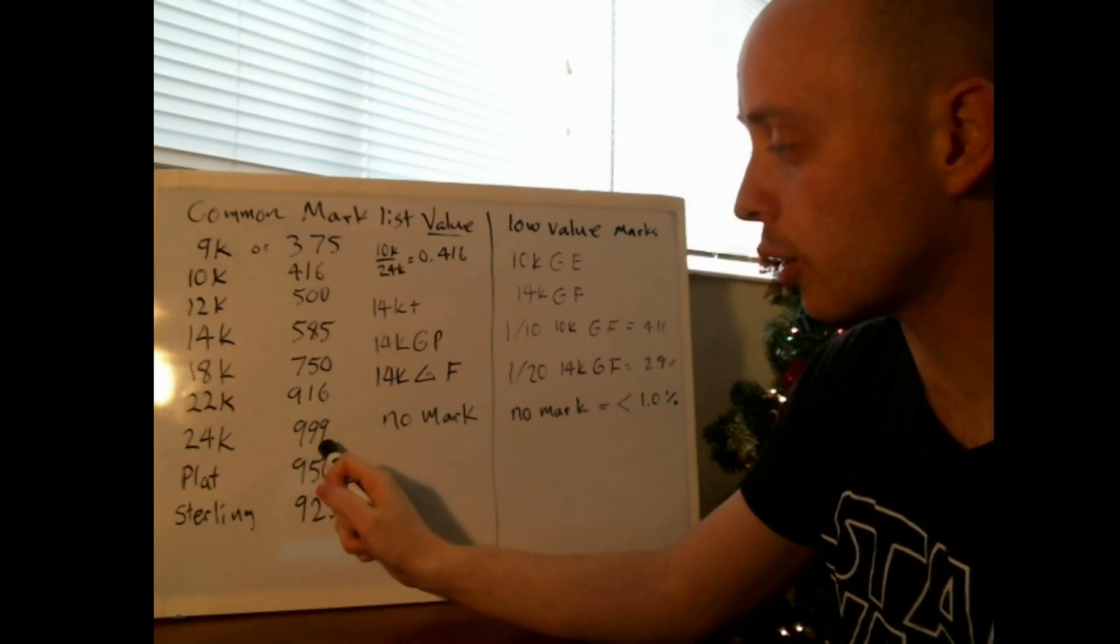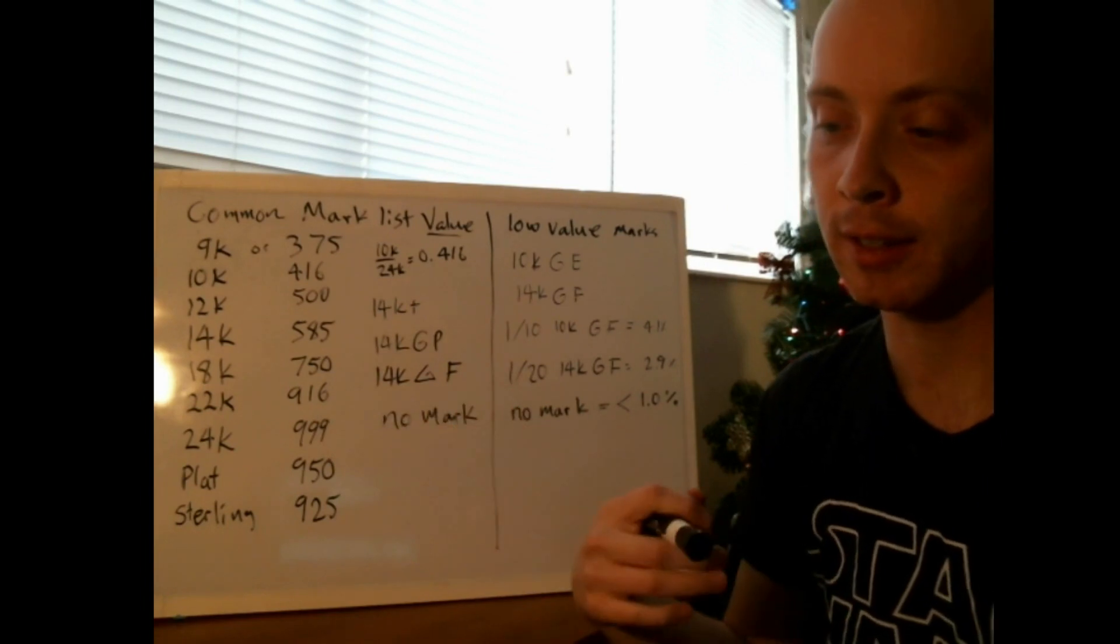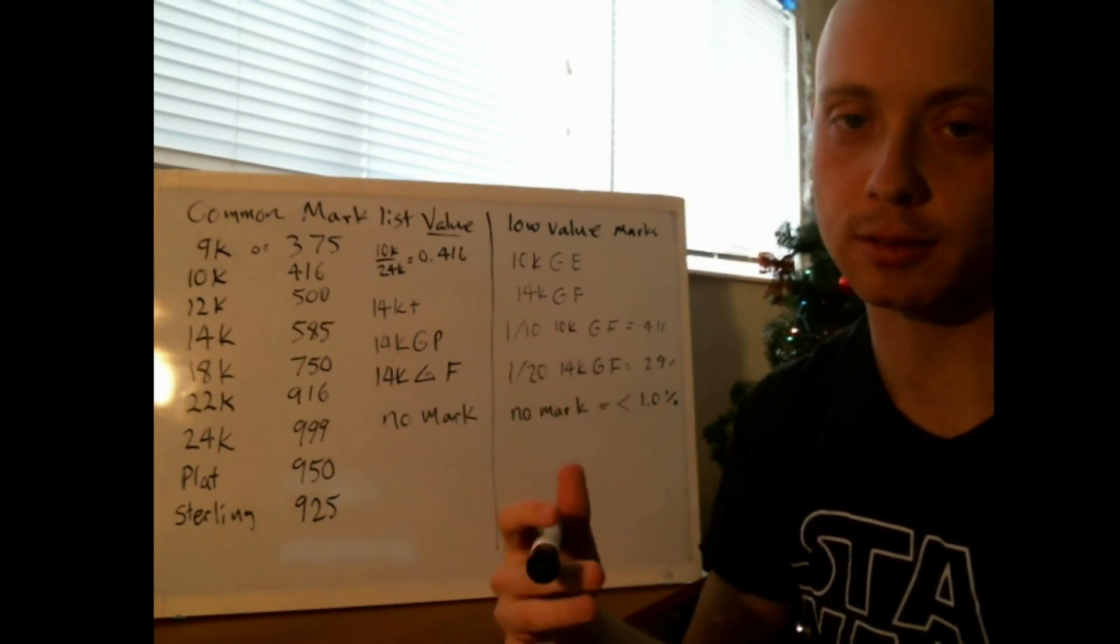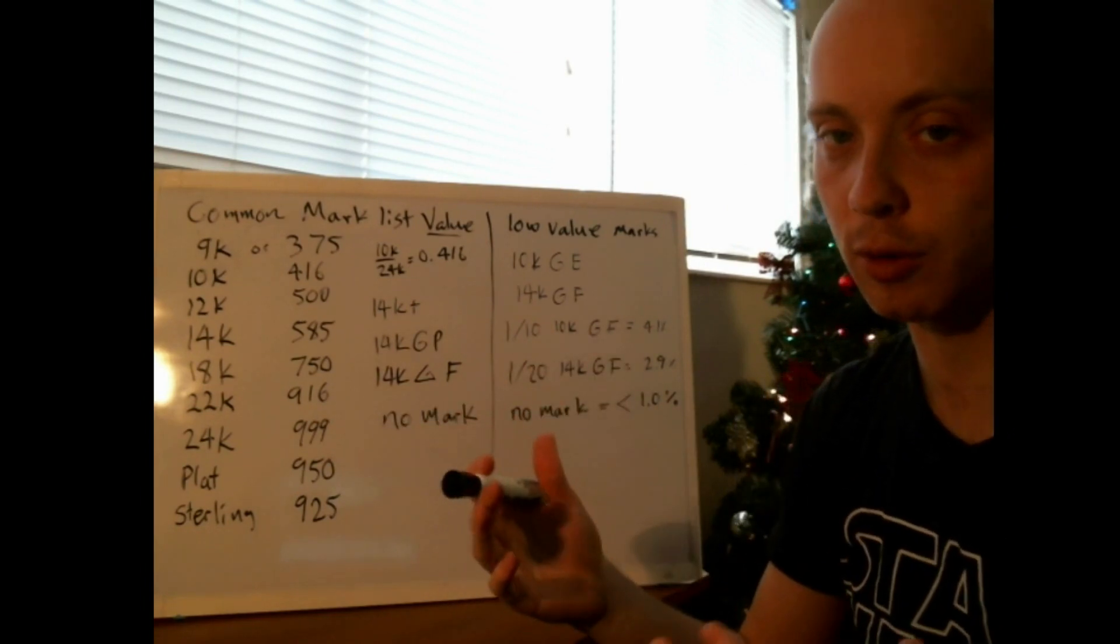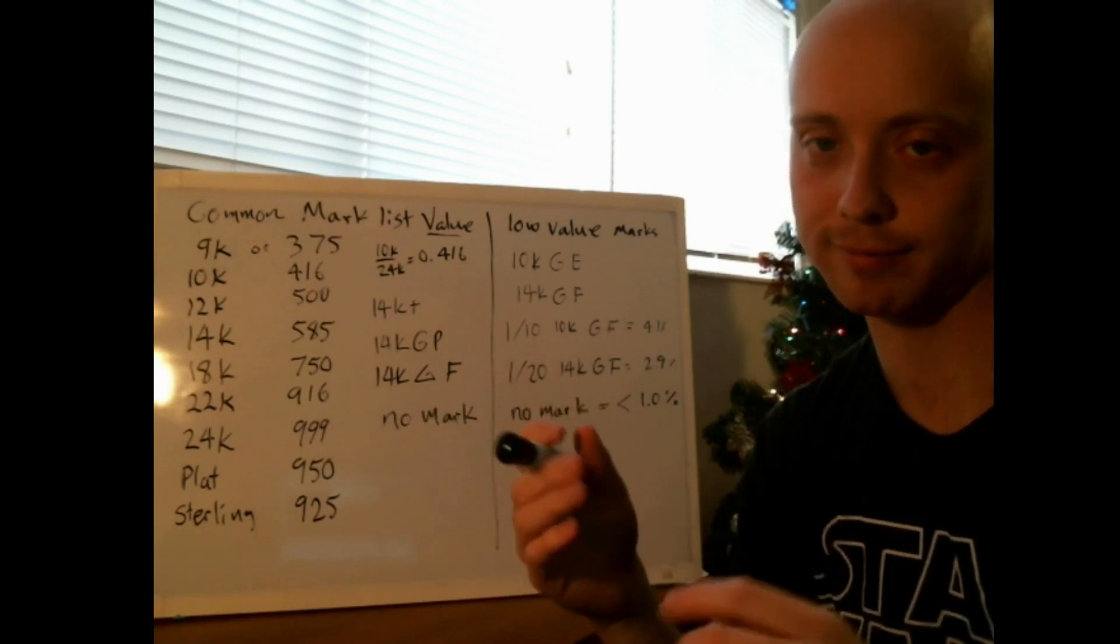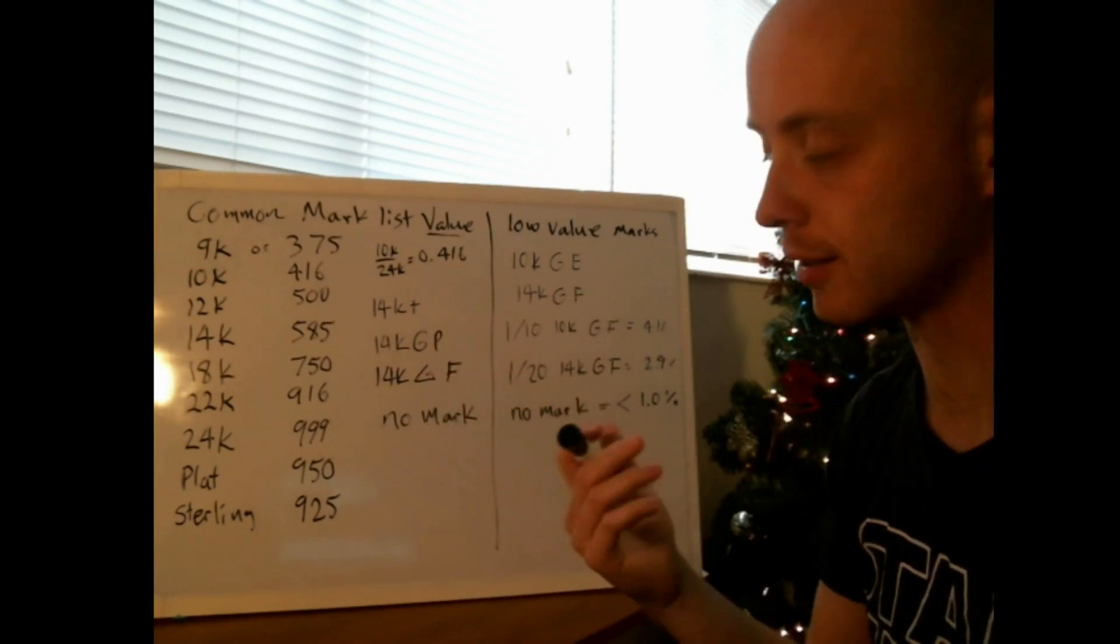24 karat gold is very yellow. Also, you'll find on a lot of bars and coins that they'll be marked 0.999, which essentially means out of a thousand parts, 999 are gold or silver, and then one part maybe some other element that got mixed in when they were purifying it. It's hard to get it completely pure.